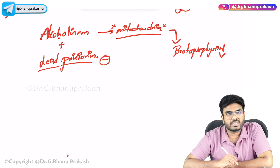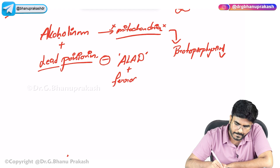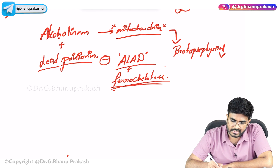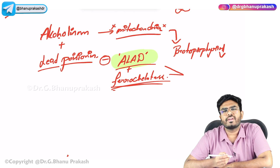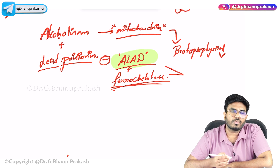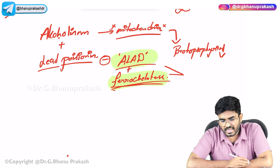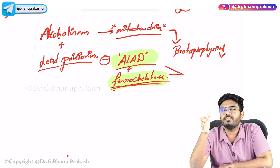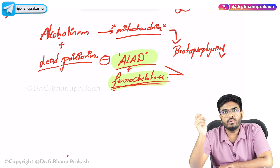Lead poisoning inhibits two enzymes: ALA dehydratase (ALAD) and ferrochelatase. With ALAD inhibited, protoporphyrin is not produced. With ferrochelatase inhibited, iron cannot bind to protoporphyrin even if it is present — both pathways block heme synthesis, causing sideroblastic anemia.